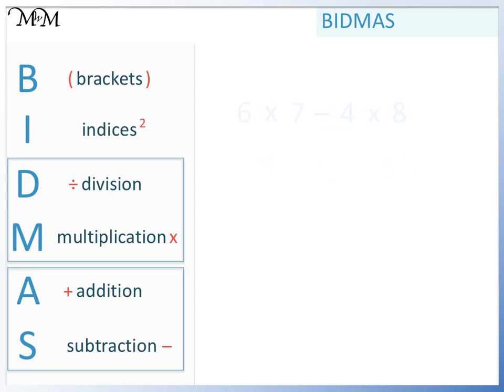Here's another example. We begin by checking B. No brackets. I. No indices. D. No division. M. We do have multiplication. We have two lots of multiplication. So we work from left to right.